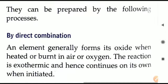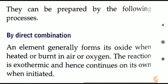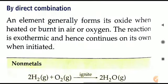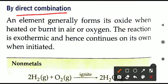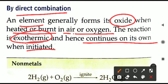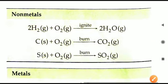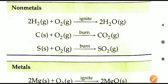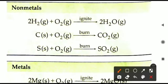First, we will begin with the preparation. The oxides can be prepared by the following methods. The first one is by direct combination, that is a combination reaction. Any element will form its oxide whenever it is heated or burned in oxygen. This reaction is exothermic — heat is produced, and once the reaction is initiated, it will keep on progressing on its own.